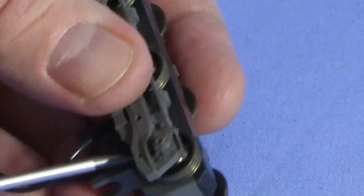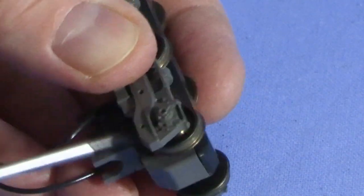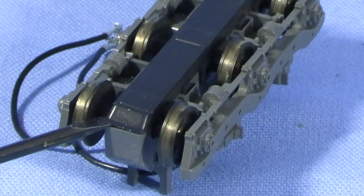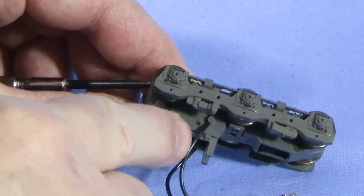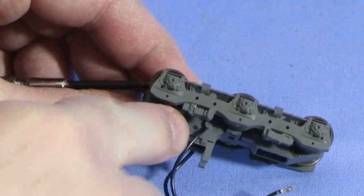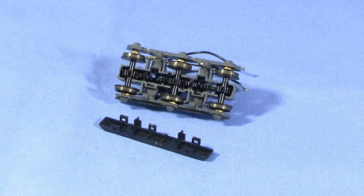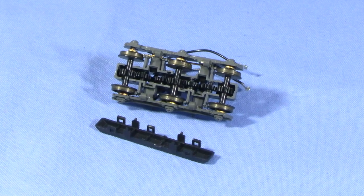I usually start on one side and one end. Be careful with these, as on older models they can become brittle and snap off. Once I have one side loose, I wedge a second screwdriver in it. Then I can work on the other side without the first one snapping back together. I work from one end of the truck to the other. Doing this takes some patience, but eventually the bottom cover will come off.